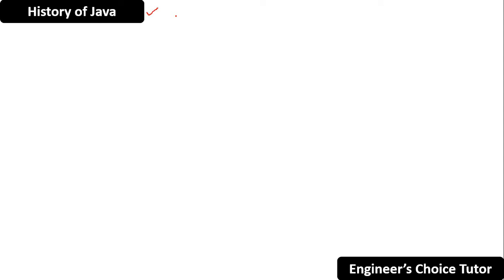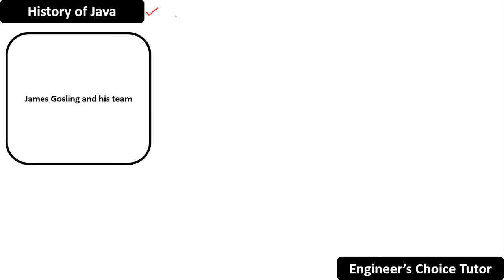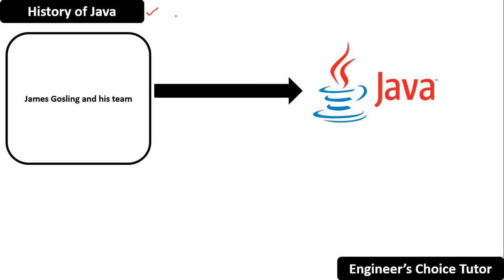Hello everyone. In today's lecture we are going to discuss the history of Java. James Gosling and his team initiated the Java language project in June 1991.